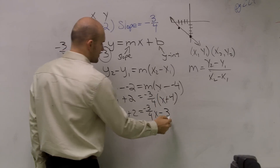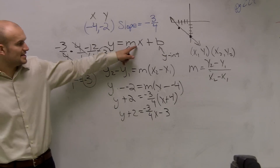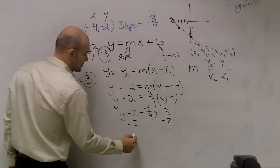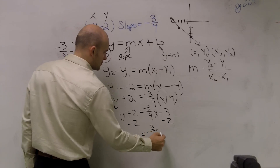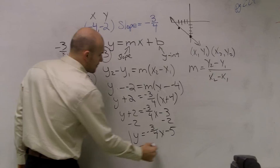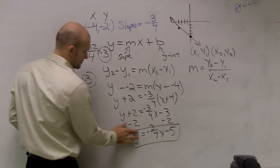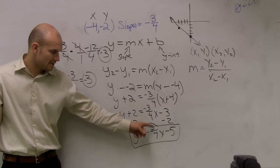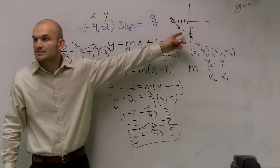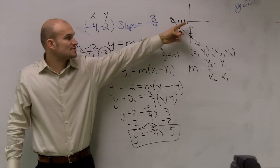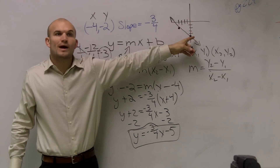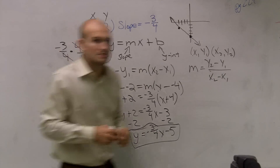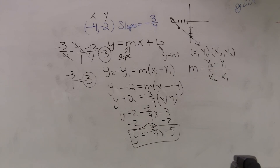That's actually minus 3. The last thing I need to do is remember I want it in slope-intercept form. So I have y plus 2, and I need to get rid of that 2 by subtracting 2 on both sides. Therefore, the equation of my line is y equals negative 3 fourths x minus 5. That's the same as what we got from our graph — the y-intercept was negative 5 and the slope is negative 3 fourths. So that's how you do it algebraically. If you're given a slope and a point, you can use that equation to solve.